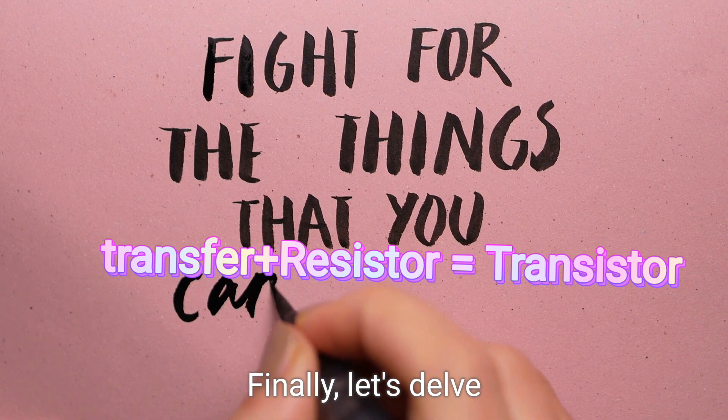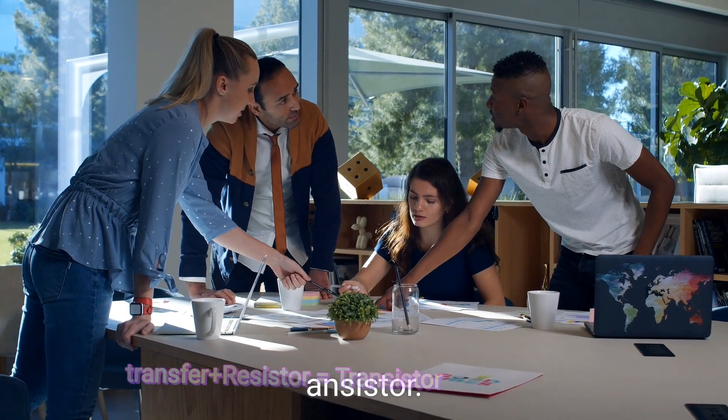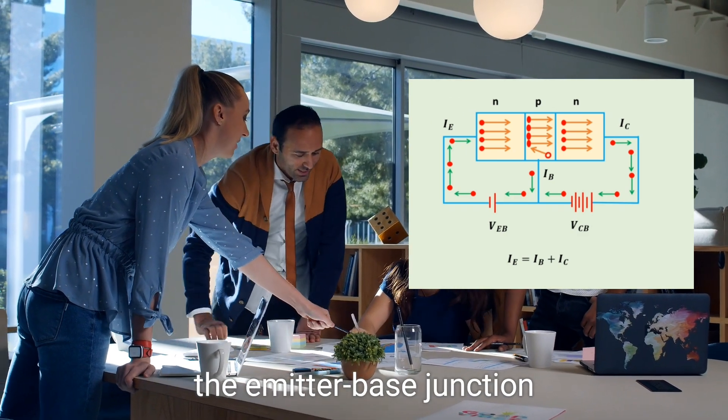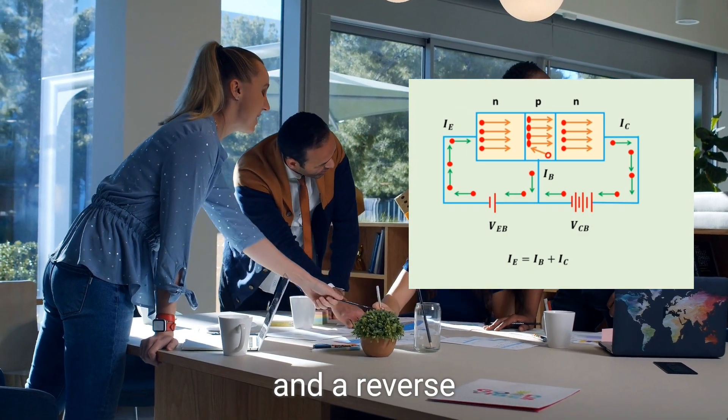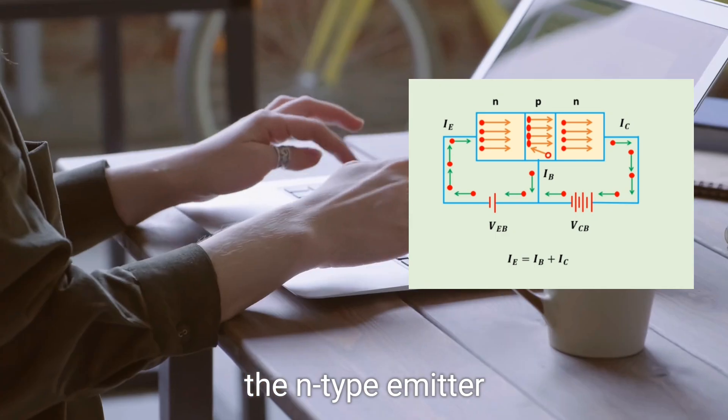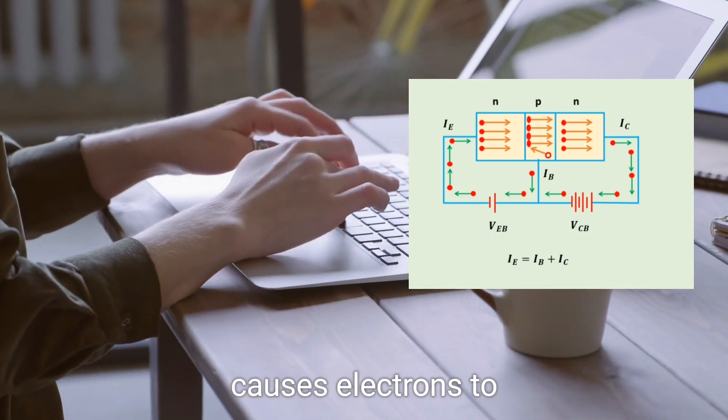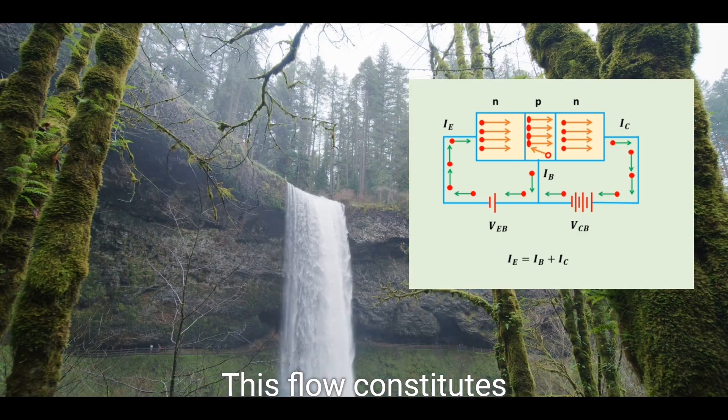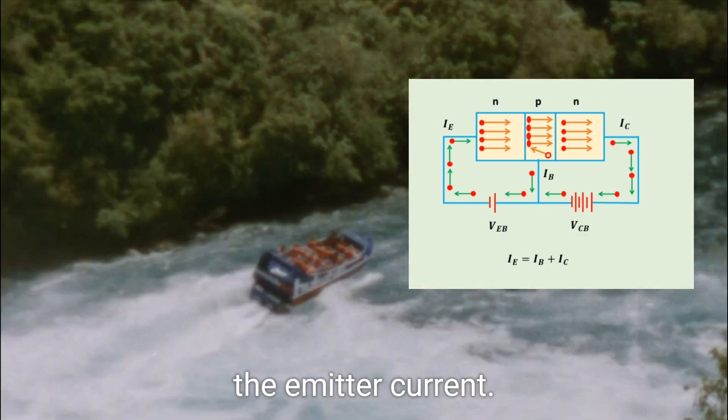Finally, let's delve into the working of an NPN transistor, with a forward bias on the emitter-base junction and a reverse bias on the collector-base junction. The N-type emitter causes electrons to flow towards the base. This flow constitutes the emitter current.